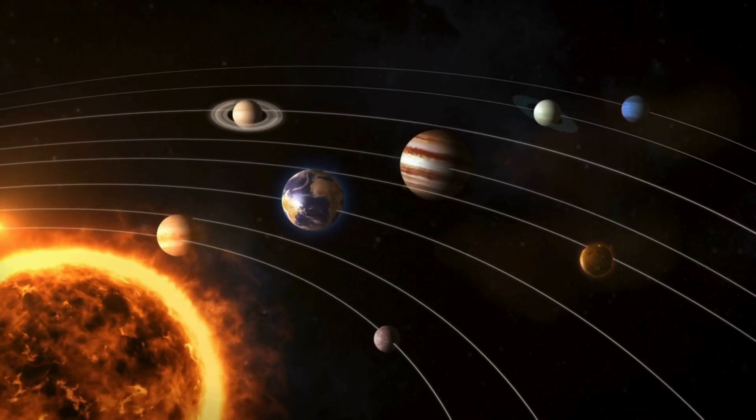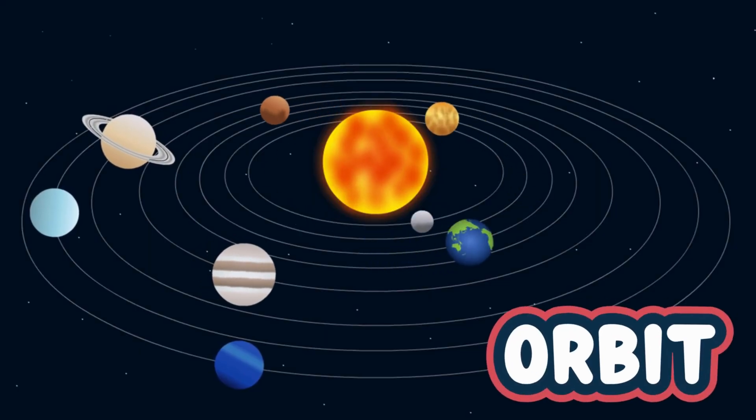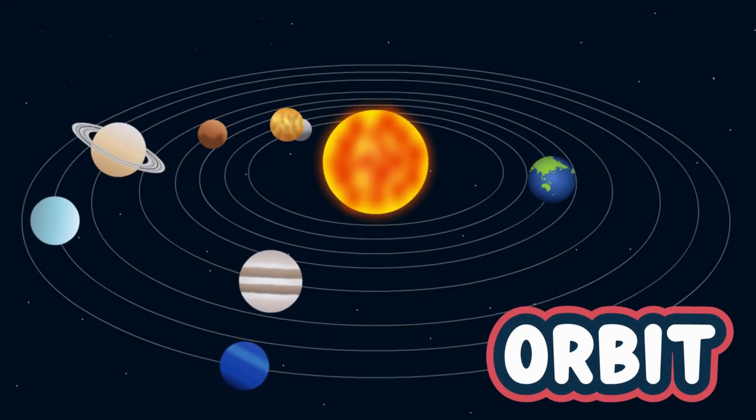Now let's zoom out a bit and meet the eight planets that travel around the sun. This path is called an orbit. Here they are, in order from the sun.